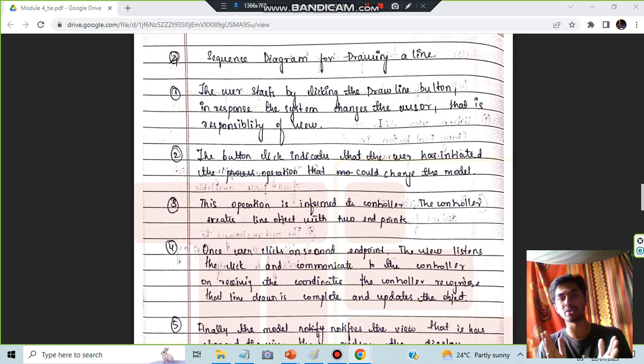To draw a line what you will do, you will select the draw line option and then you will specify the starting point, then you will specify the ending point and then the line will be drawn. These 3 are the steps which is happening but there are 2 more steps in between which is happening internally. So let's have a look at what it is.